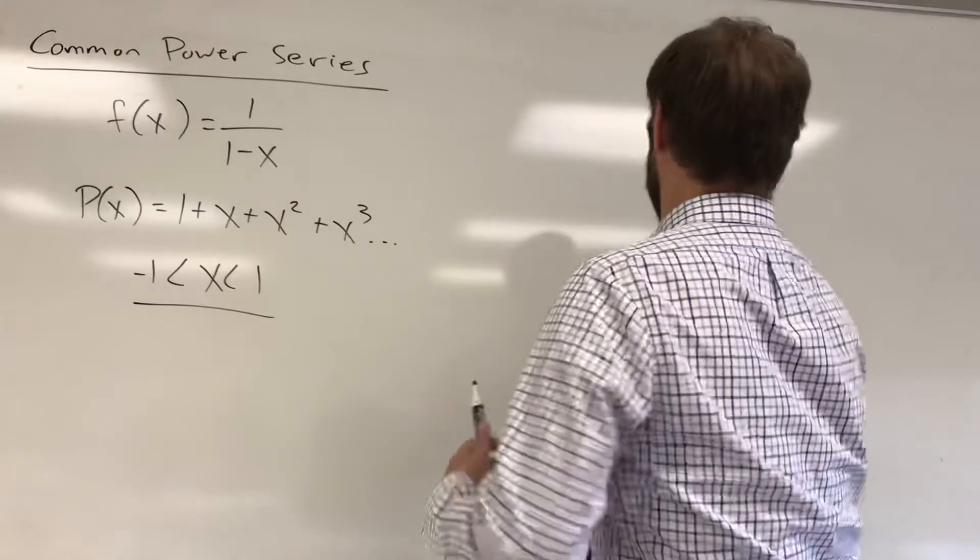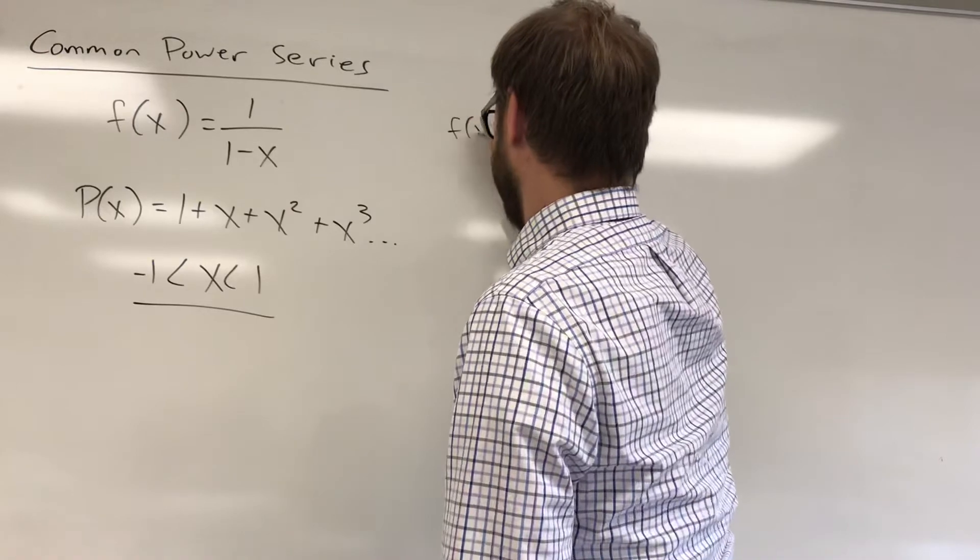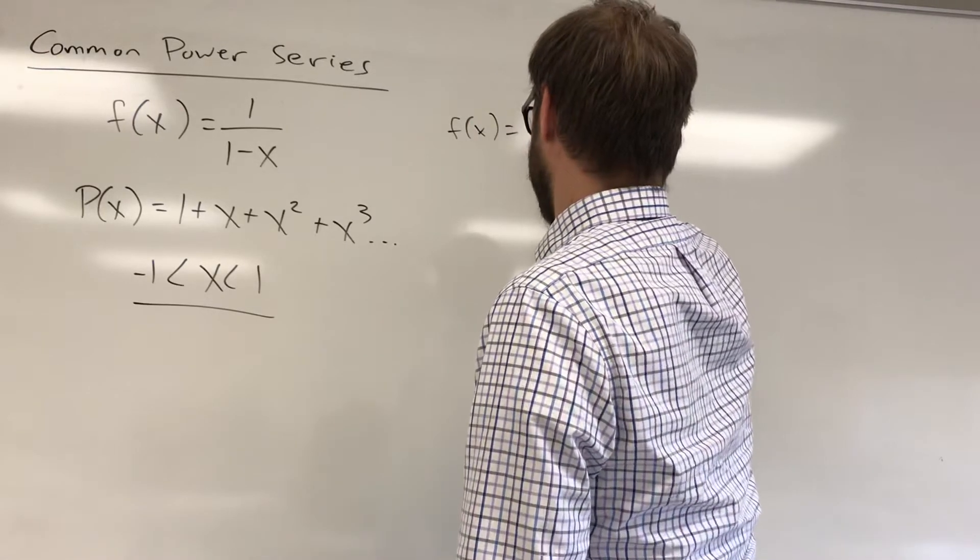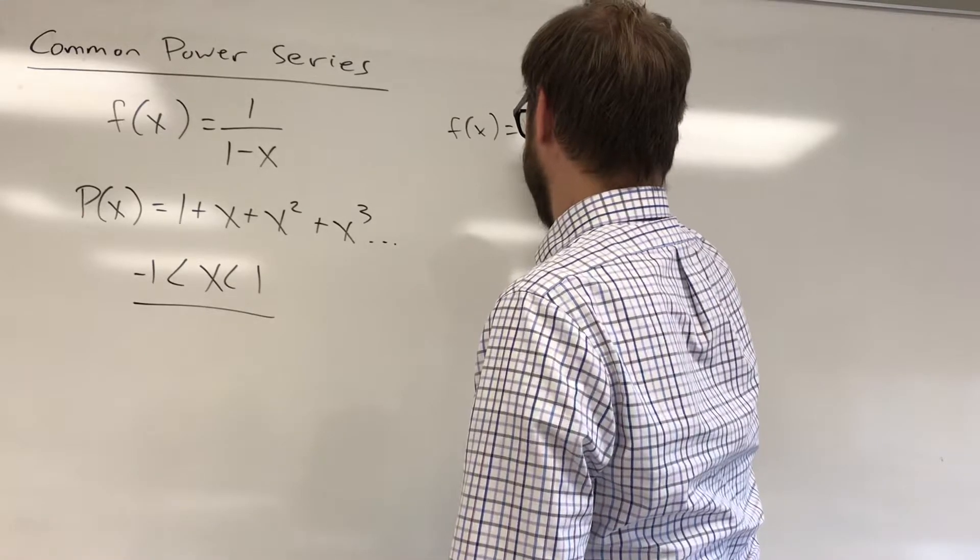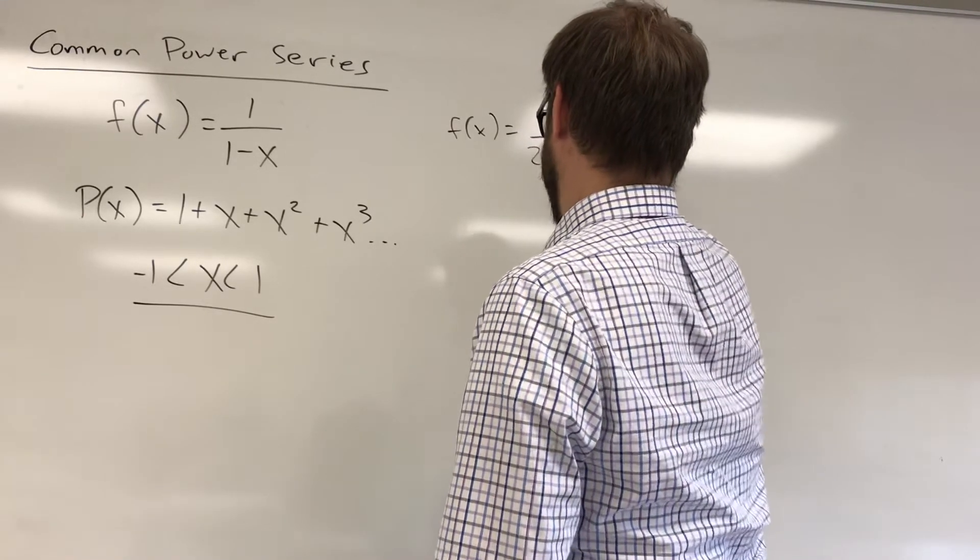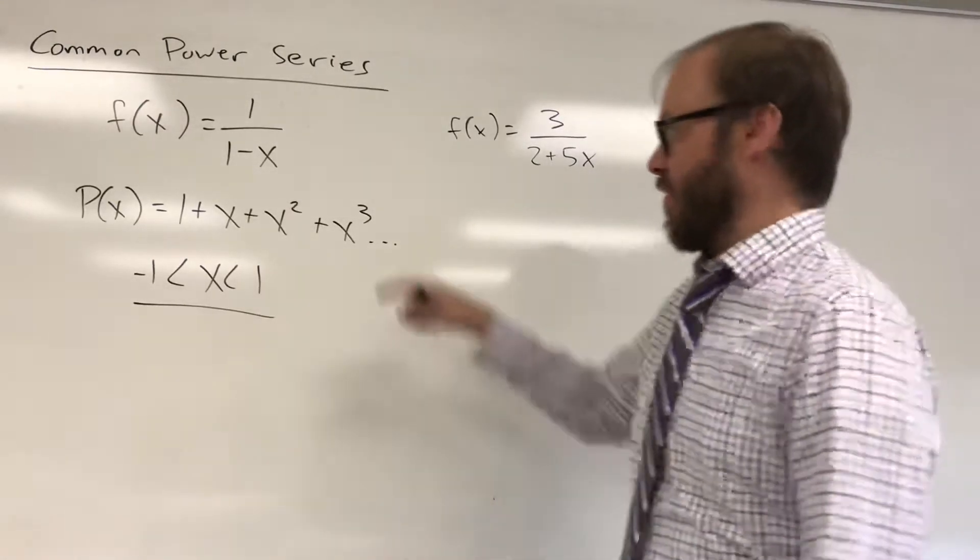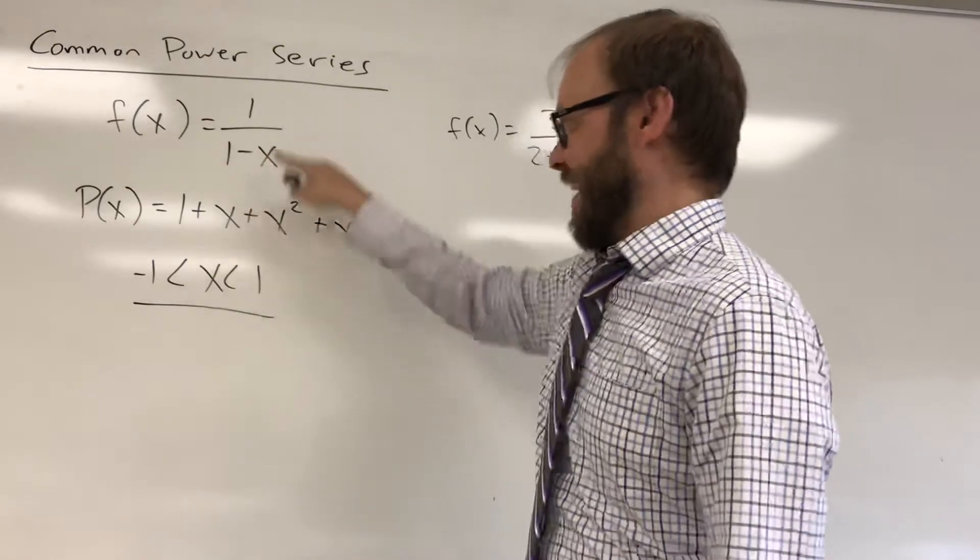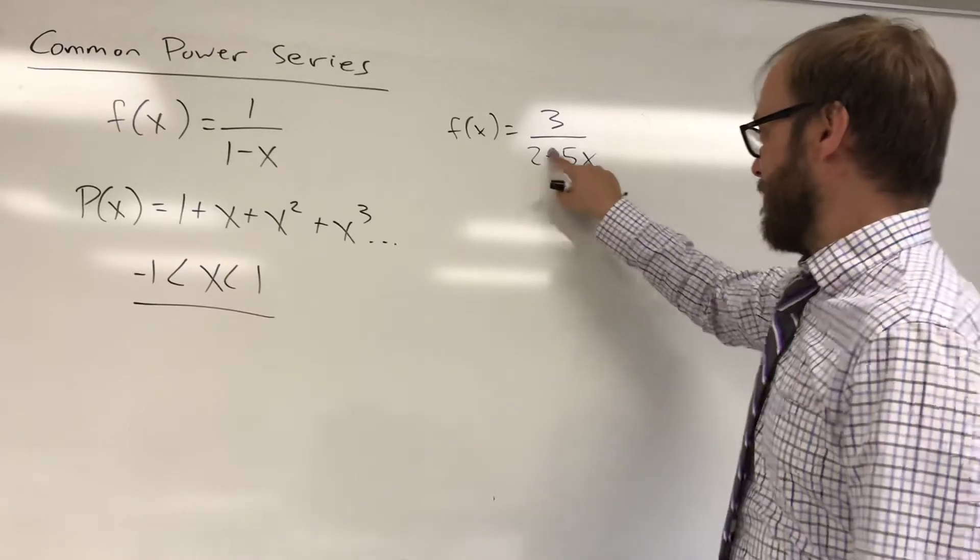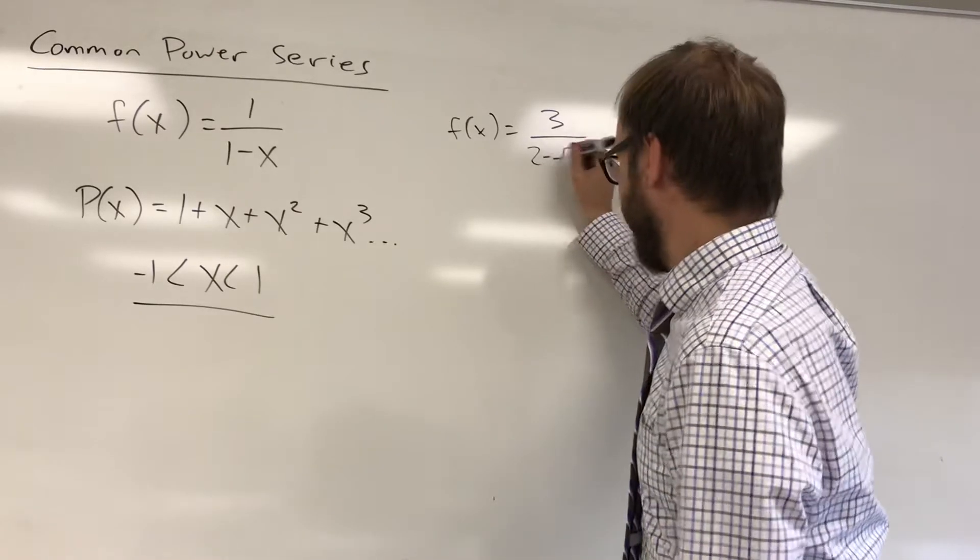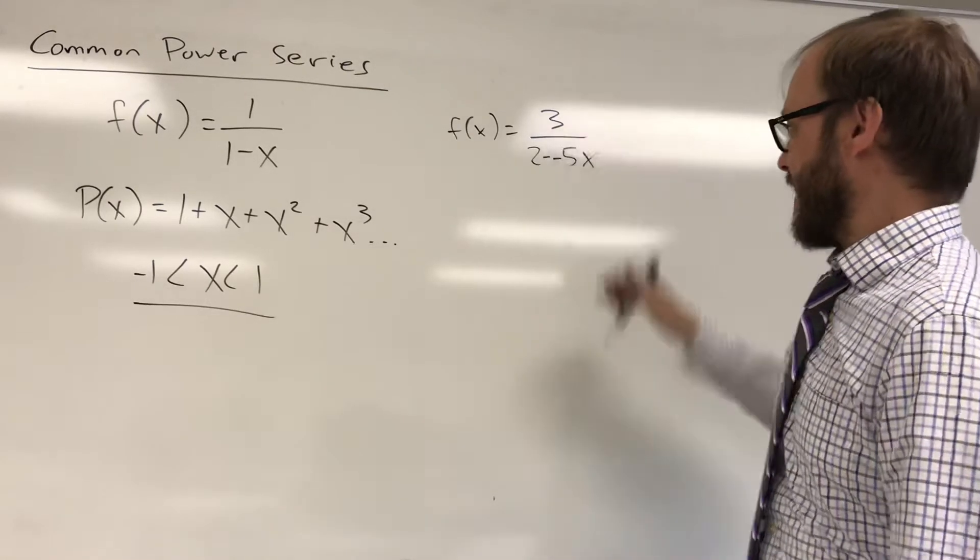Just to do something particularly bad here, let's say we had something like f of x is equal to, let's do 3 over, let's do something like 2 plus 5x, something like that. First of all, you want a 1 here, you want a 1 here, and you want a minus there. Then whatever your input is, is going to end up being there. So first of all, I'd write that as 2 minus a negative 5x.